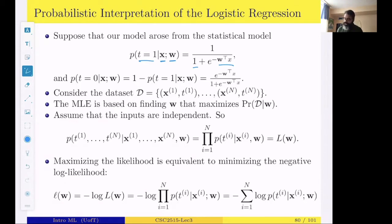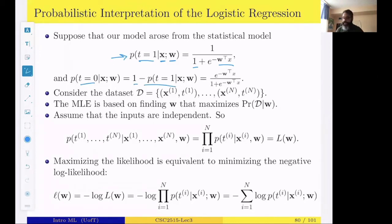Let me go through this quickly — you can check the details yourself later. The probability of being class one is that sigmoid expression. The probability of class zero would be one minus the probability of class one. Since this is binary classification, it would be e^(−w^T x) divided by the same denominator.